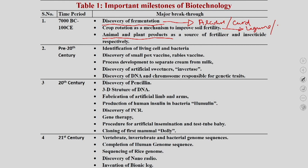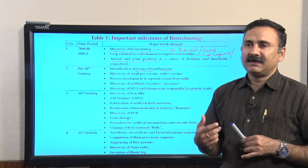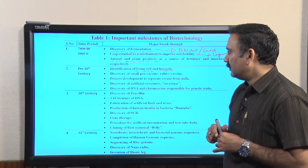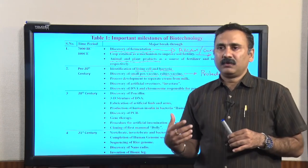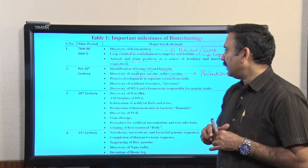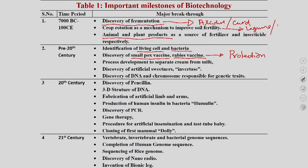In the pre-20th century, humans started developing living cells and identifying bacteria, helping them to utilize these living cells or bacteria for different types of applications — for example, developing bacteria for making curds or other fermentation products. They also discovered different types of vaccines such as the polio vaccine, smallpox vaccine, and rabies vaccine, which protected human beings against diseases, reducing loss of life by death and providing immunity.